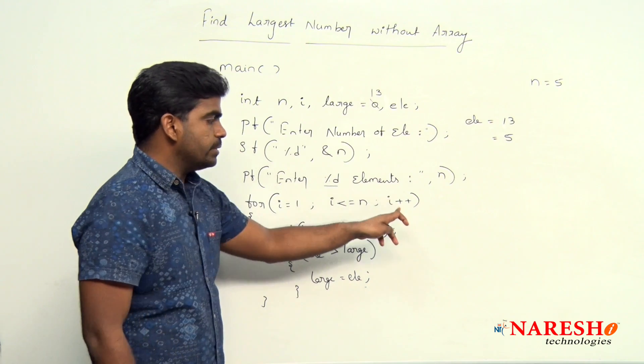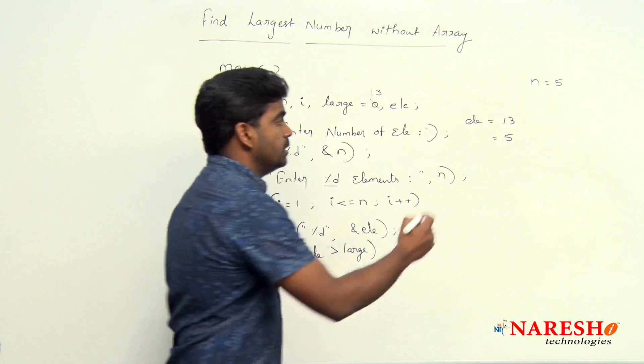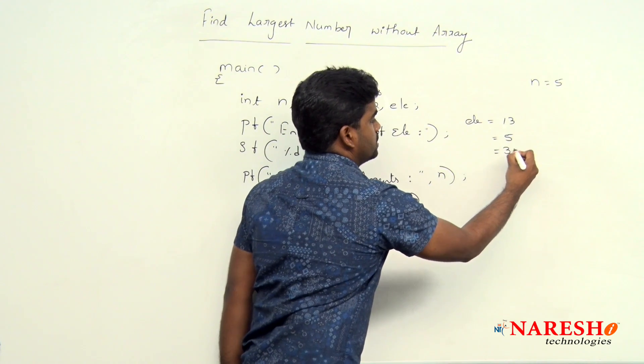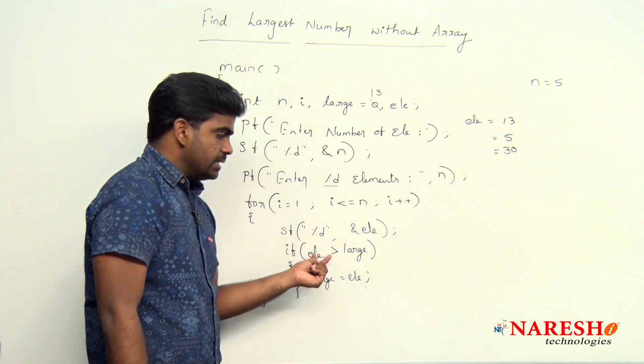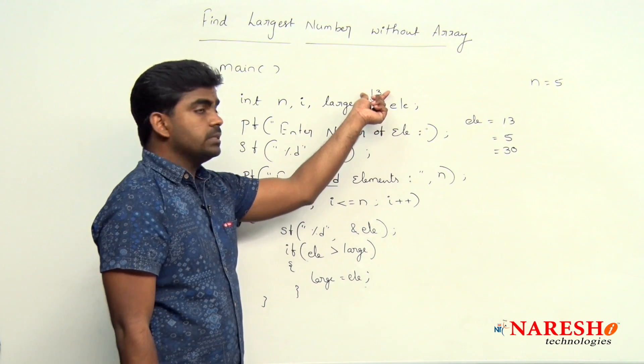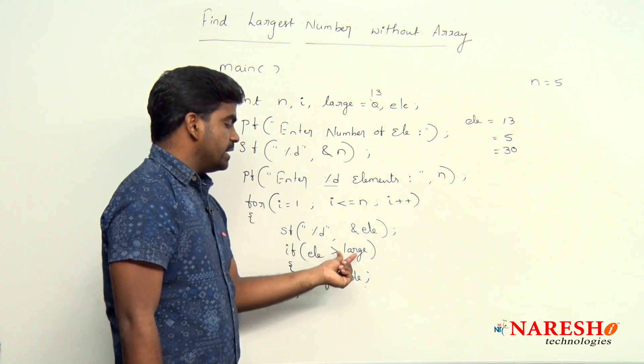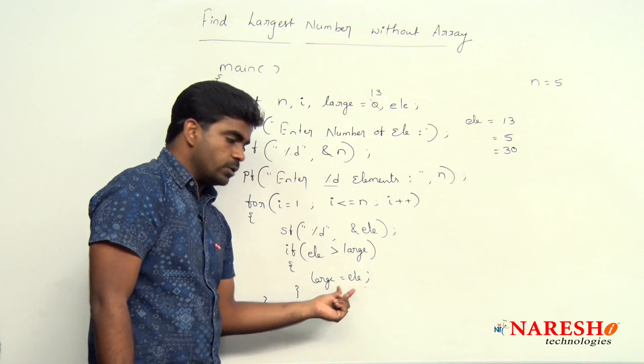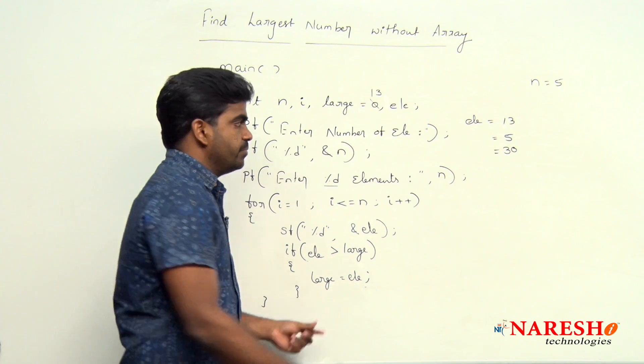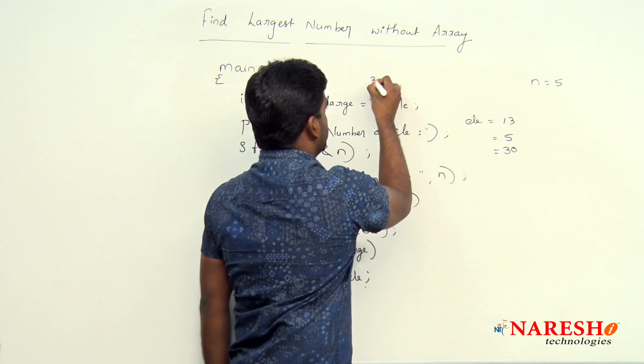Next, again I value increase to 3. So third element it will collect, suppose 30. 30 we are reading. Now 30 element is greater than large, large value 13. 30 is greater than 13, yes condition true. Then that element 30 will go on storing into this large. Now this value become 30.